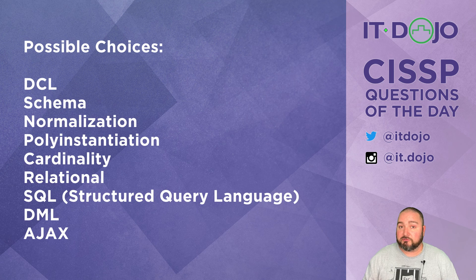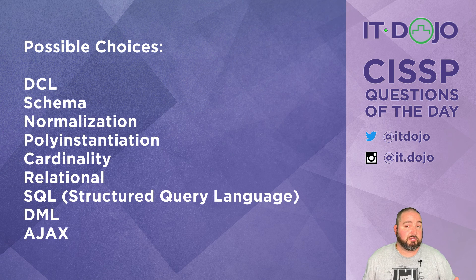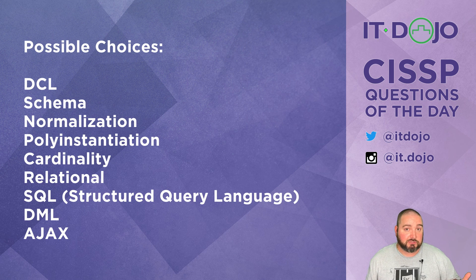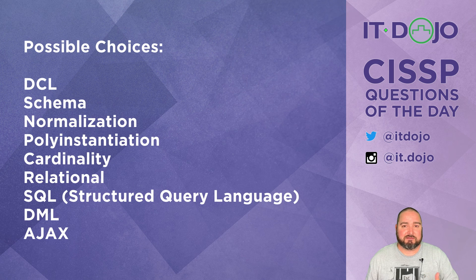Go ahead and click pause, figure out what the answer is, and when you're ready, click play. In the context of SQL, Structured Query Language, SQL is broken down into a variety of different types of statements: data definition language, data manipulation language, data control language, data transaction language, and data query language. Each of them distills down into different command types used to manipulate the database in some way.